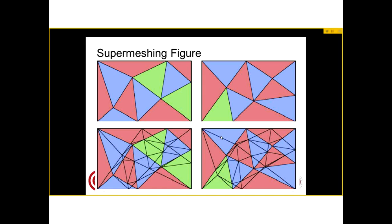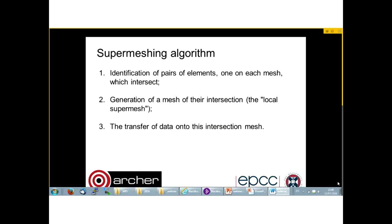On the lower right corner we can see the inverse, where the donor mesh is Mesh A, and we have a supermesh which is created with Mesh A as the donor mesh. The supermeshing algorithm is quite simple and is trivially parallelizable. It has three steps: first we identify pairs of elements, one on each mesh, which intersect; then we create a mesh with their intersection called the local supermesh; and then we transfer data from the two meshes to the intersection mesh.